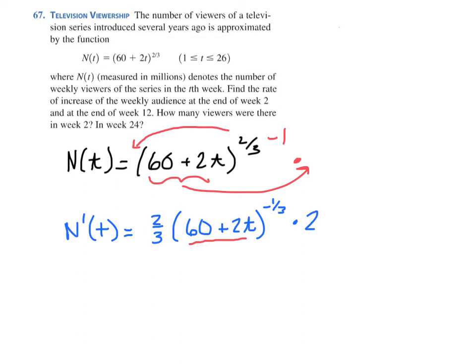So you put that all together, and if we write this as a power, this would be 4/3, because 2 times 2/3 is 4/3, times the quantity (60 + 2t)^(-1/3).